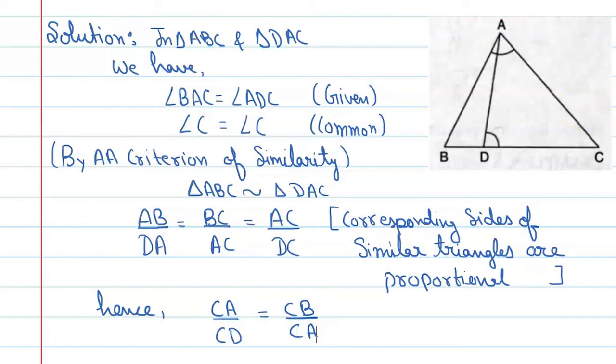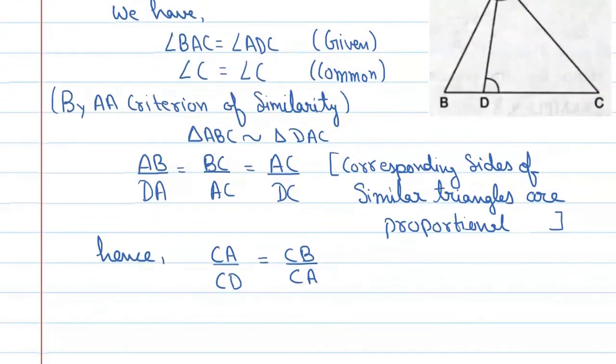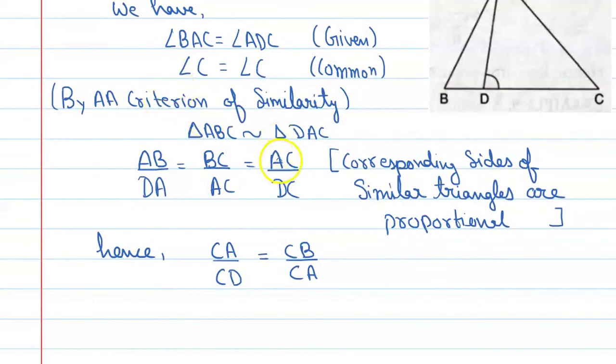How did this relation come? If you look here, this is AC means CA, this is DC means CD, and this is BC means CB, and this is AC means CA. So we can write in this form and we can write our final answer that is proved.